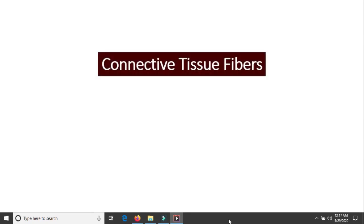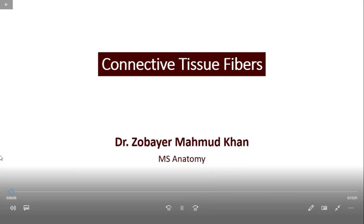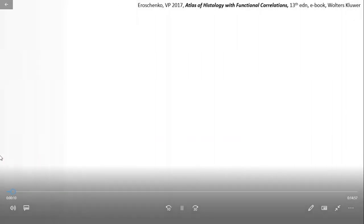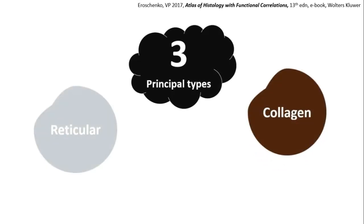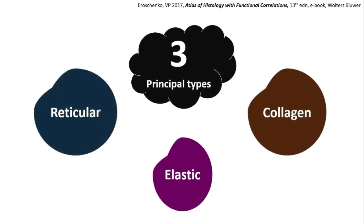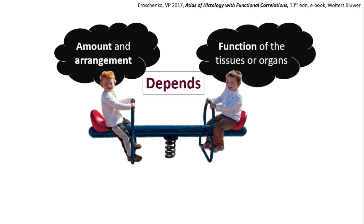Dear students, let us know about the connective tissue fibers. There are three distinct types of connective tissue fibers: collagen, reticular, and elastic. The amount and arrangement of these fibers depend on the function of the tissues or organs in which they are found.